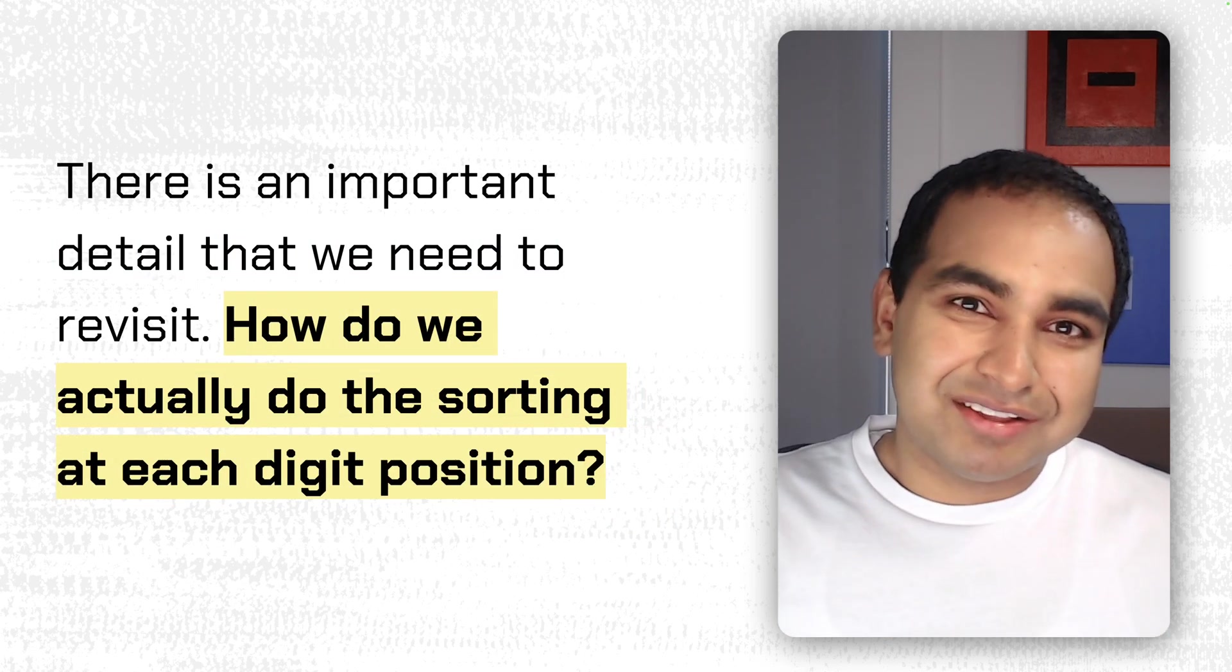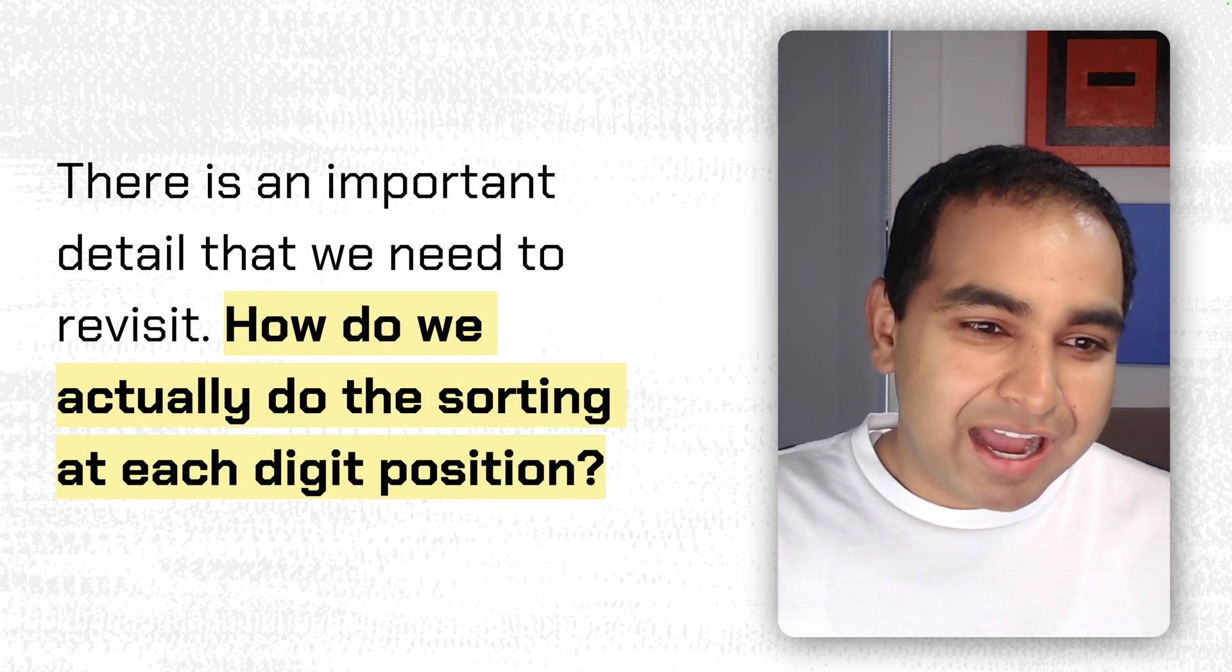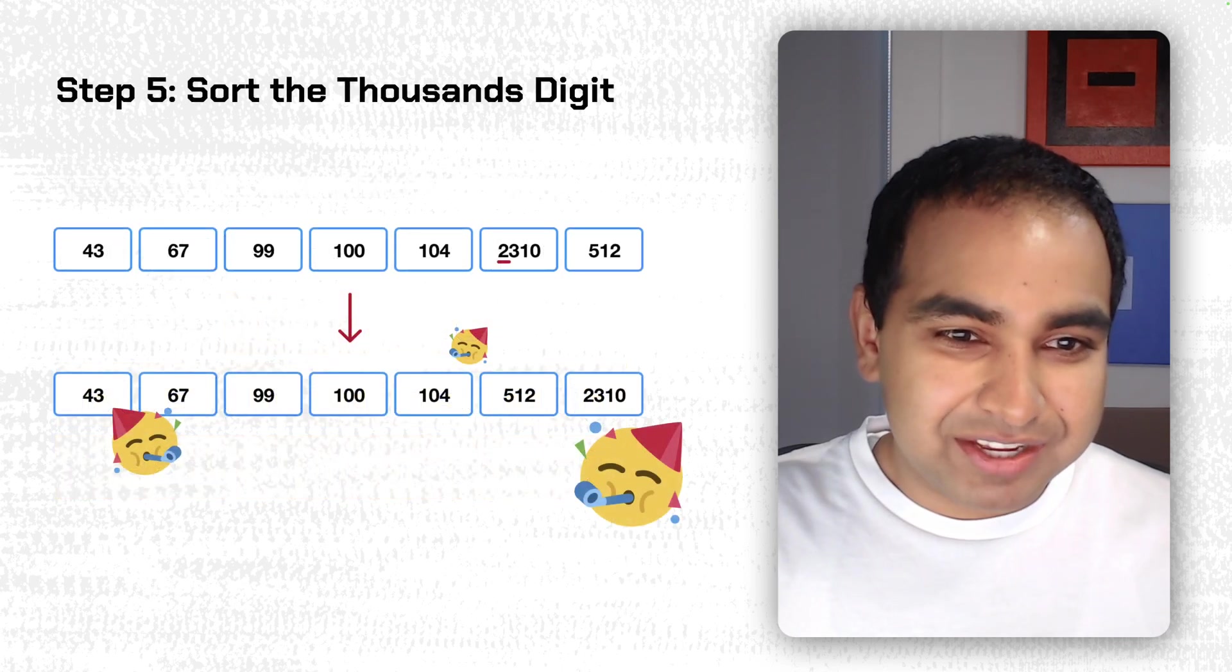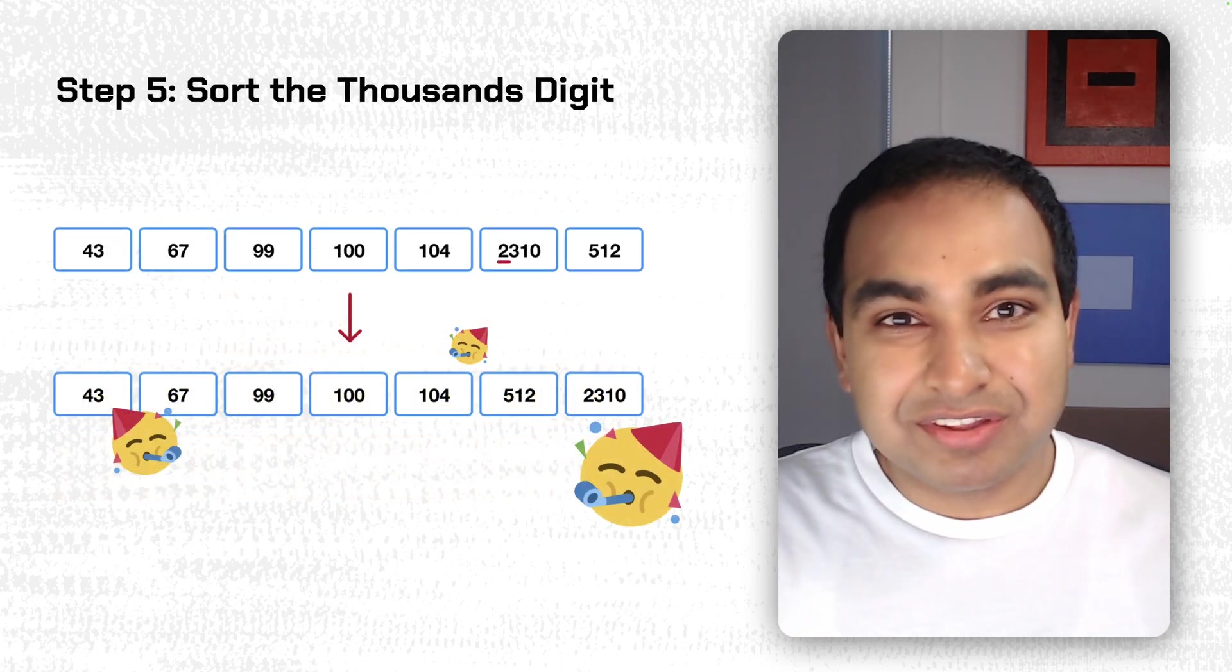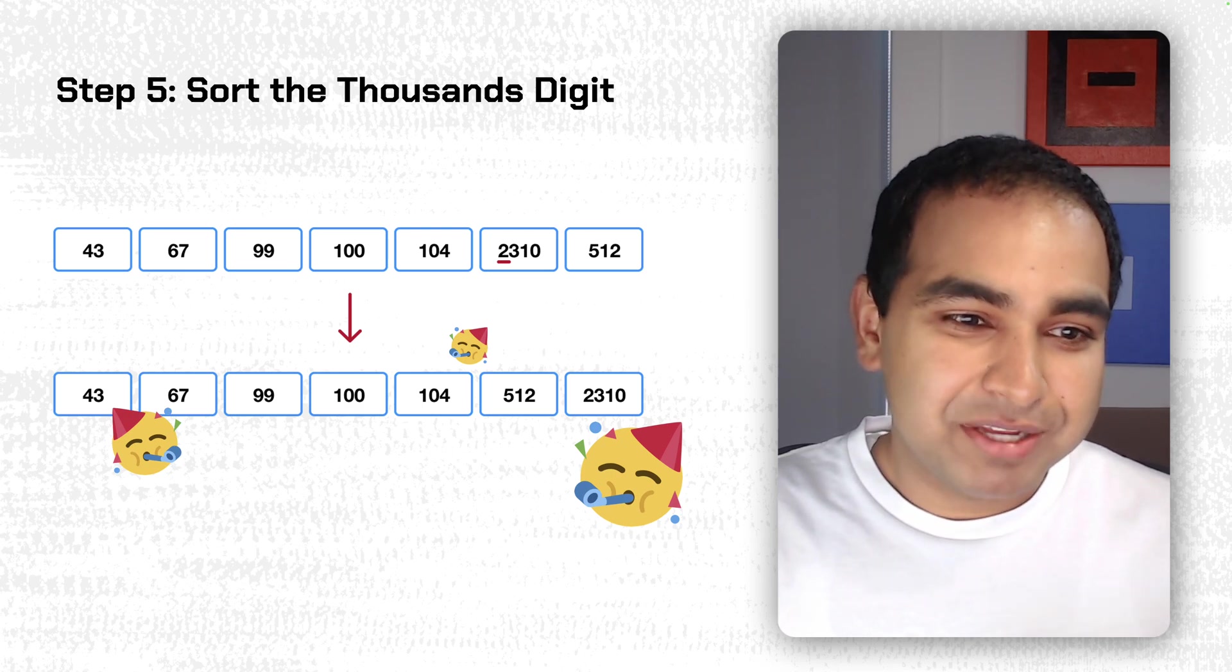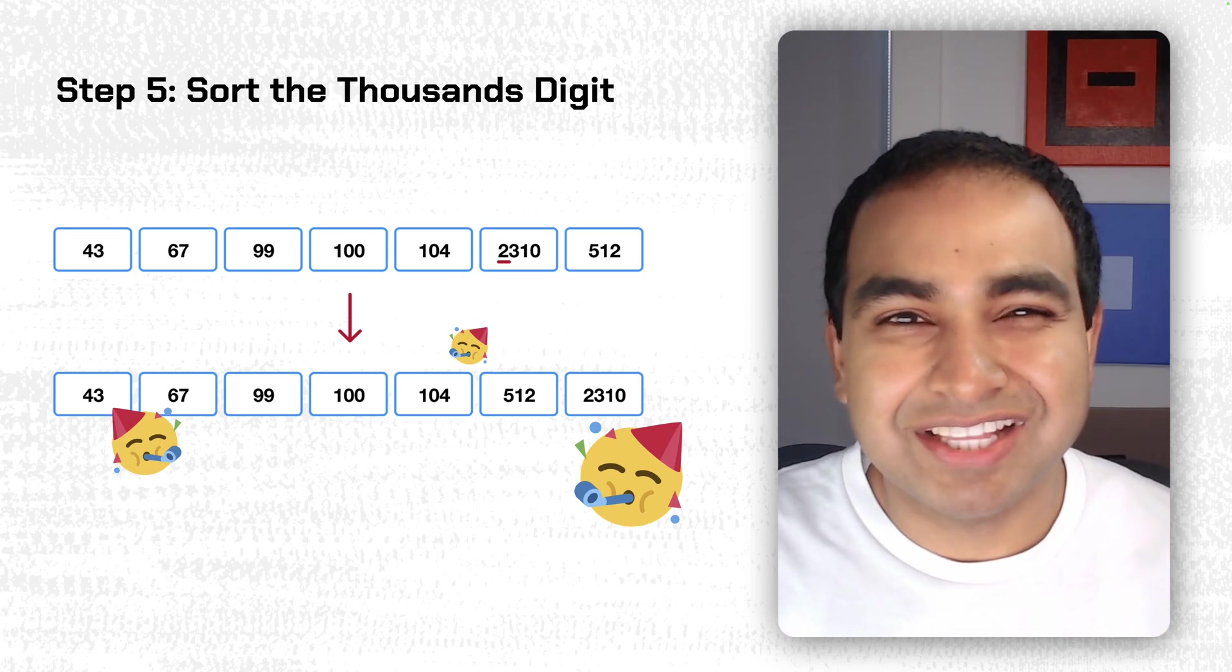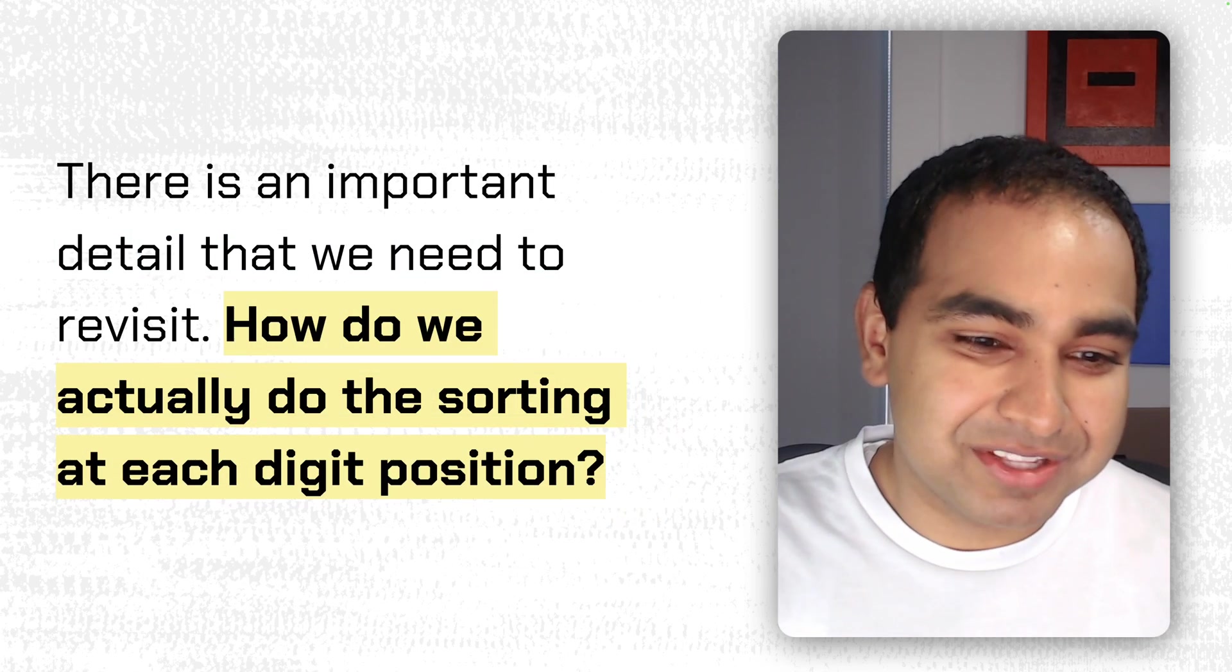Now, there's an important detail, though, that we kind of need to revisit. How do we actually do the sorting at each digit position? We were pretty confidently going from starting by the ones digit, the 10s digit, and so on, but we did it mentally, and we vocalized how it needs to be sorted, but our computers aren't like that. They need some logical steps on how to do this.